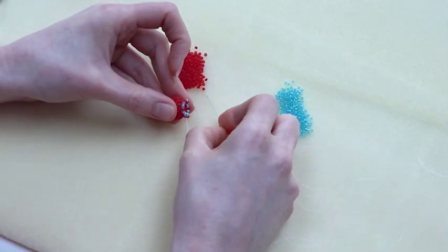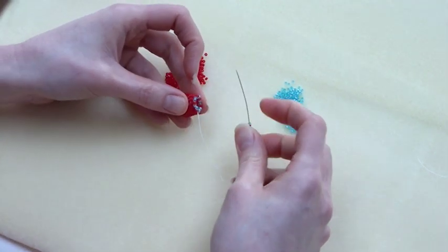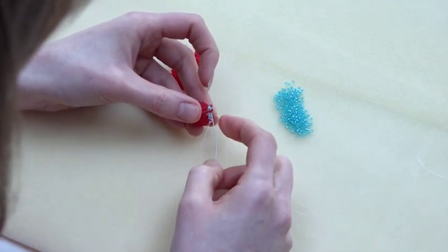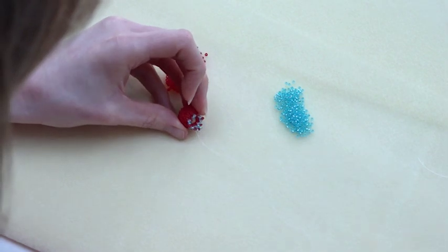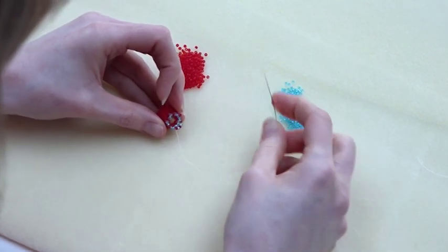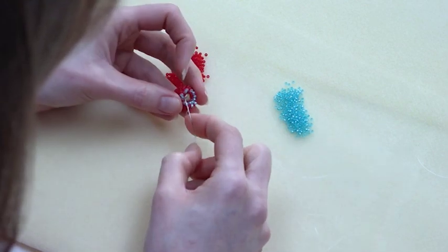So we've got another row with three beads. So this time you've picked up your three beads, you're going through the middle bead in your next loop, so using these contrast colours make it really easy to spot that. So, carry on all the way around.